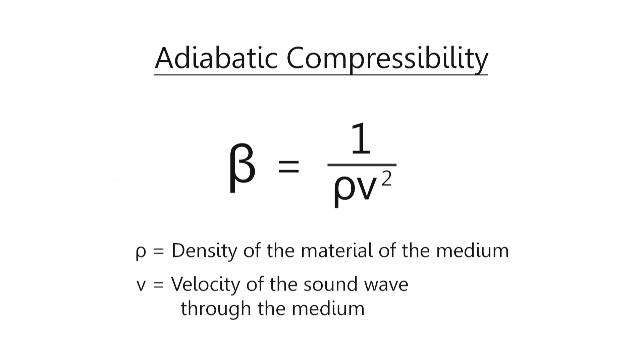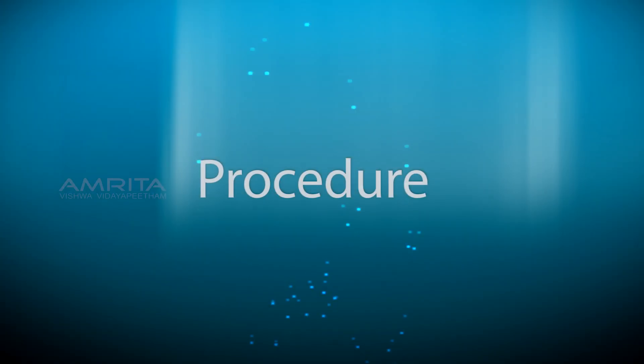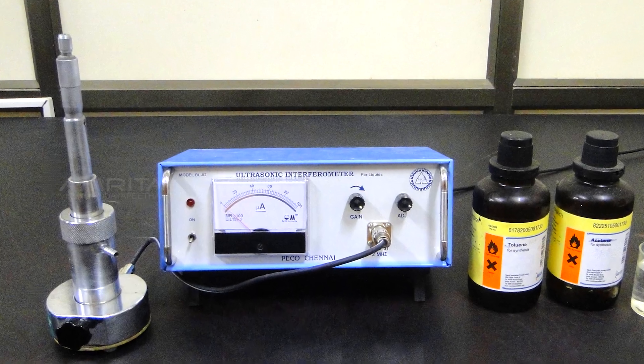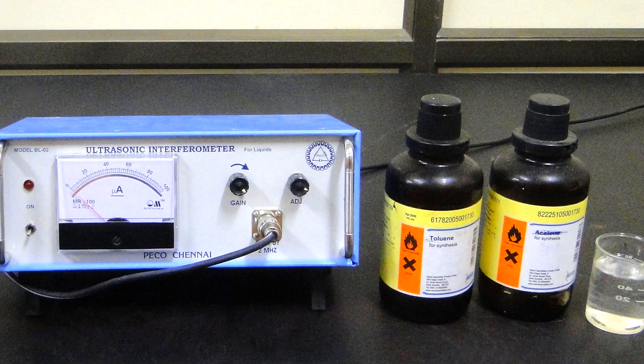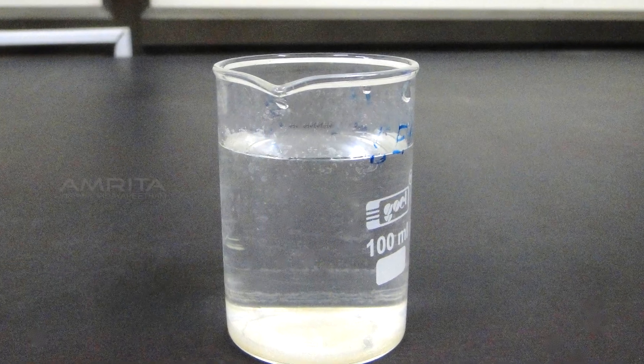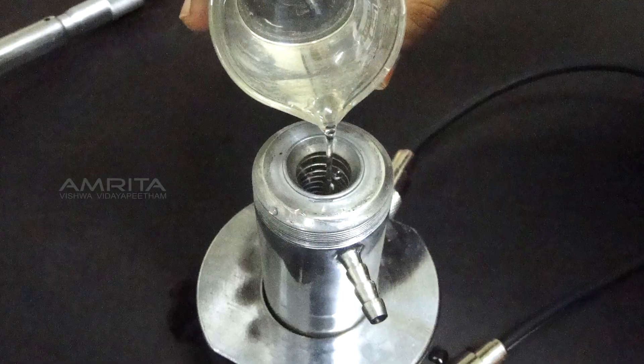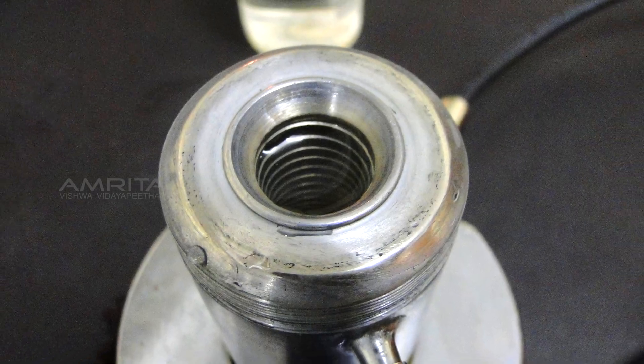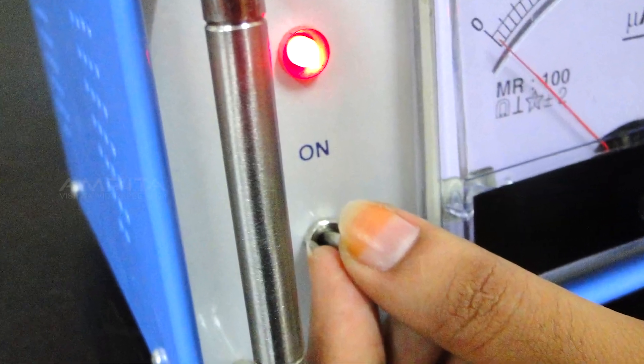Procedure: Arrange the ultrasonic interferometer and the liquid samples that are to be used. Take a liquid sample in a beaker. Unscrew the knurled cap of the interferometer, pour the sample into the interferometer cell, then tighten the cap. Switch on the power supply.